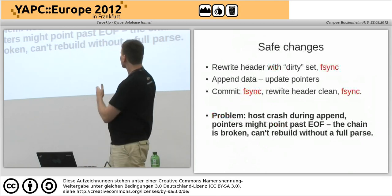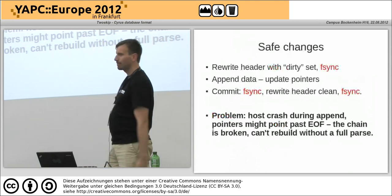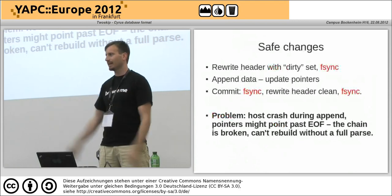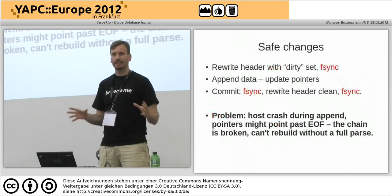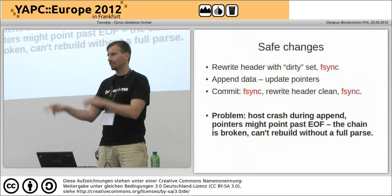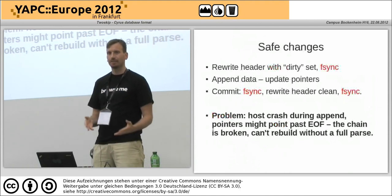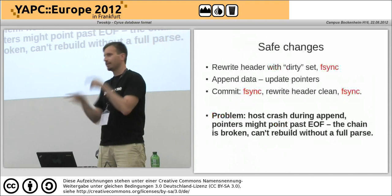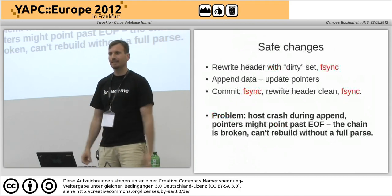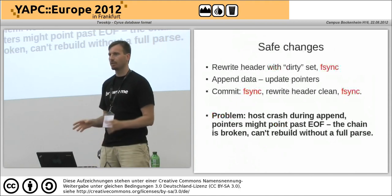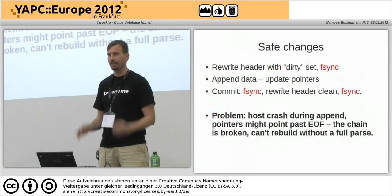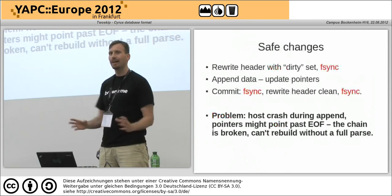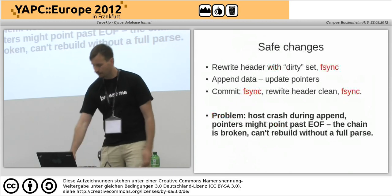One problem: if the host crashes during the append, you have pointers already updated that point past the end, and you can't reconstruct your original chain. So in this case, you go through and read every single record and update the pointers. With SkipList, we're finding it took about half an hour on our big 300-400 megabyte databases on a busy server. Half an hour for someone's mailbox to be locked — not good.